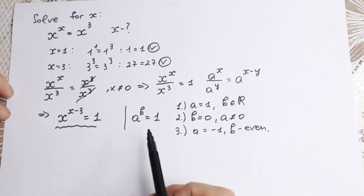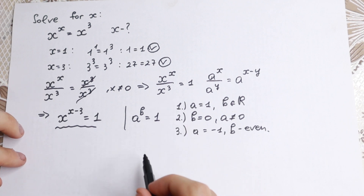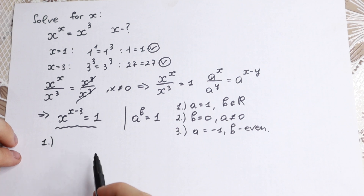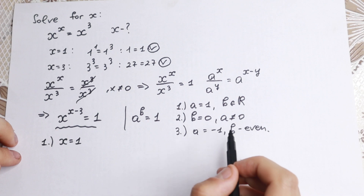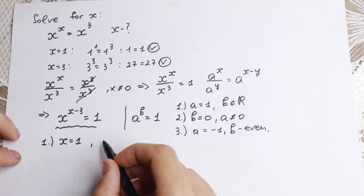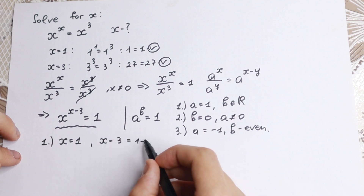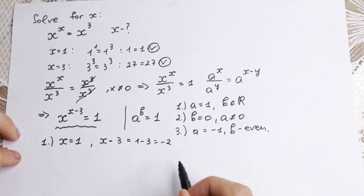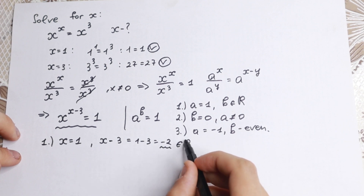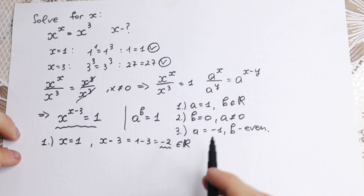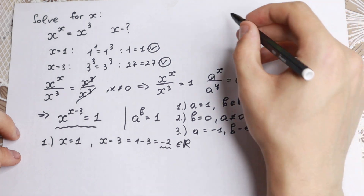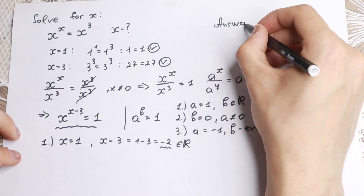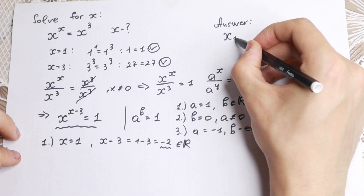Let's check all three cases. For the first case, if x equals 1 (so a equals 1), then b just needs to be a real number. In our equation, the power is x minus 3, which equals 1 minus 3 equals minus 2. Since minus 2 is a real number, the first case works, and we have proven our first root: x₁ equals 1.